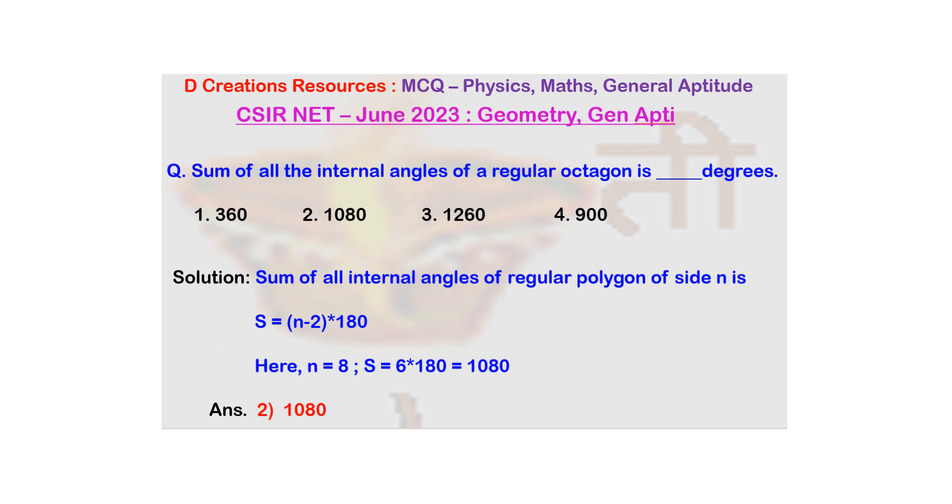Now, we can just verify it right here. For example, let's take the example of a triangle. Triangle has three sides. So, the sum is 3 minus 2 into 180, which is 1 into 180, basically 180. And we know that sum of all the angles of a triangle is 180.